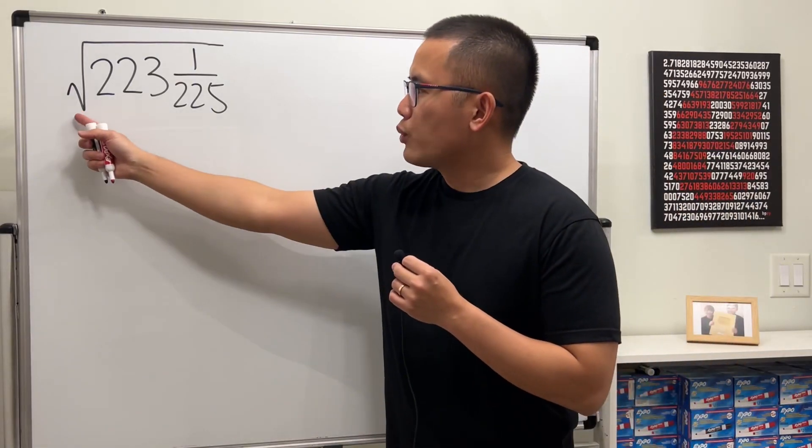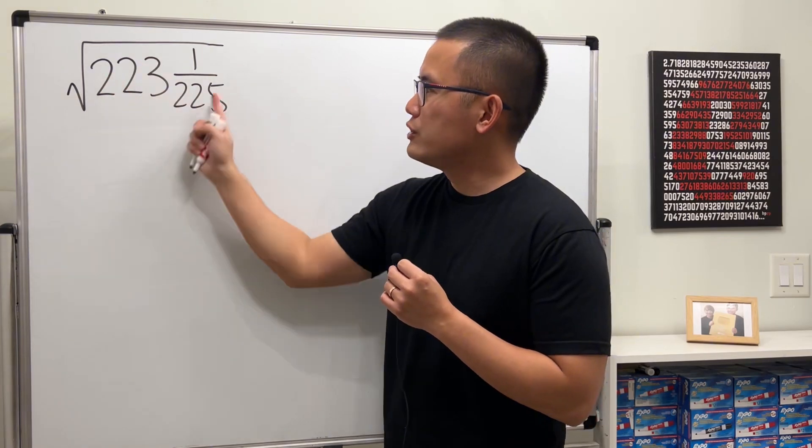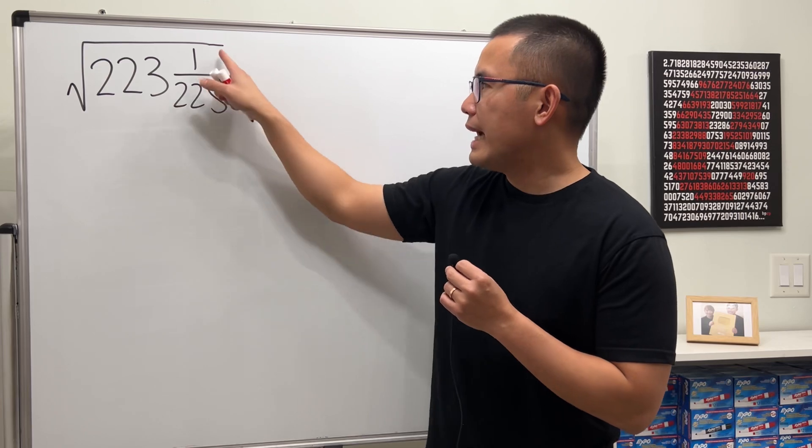So how would you simplify the square root of this mixed number? Well, usually we will have to change this into an improper fraction. And to do so, we will have to multiply this and that, and then add it to 1.